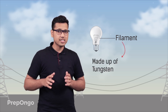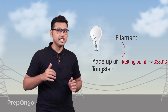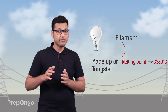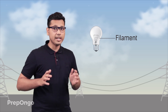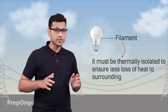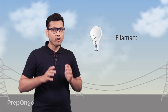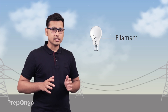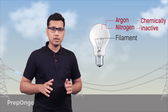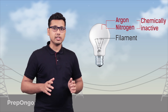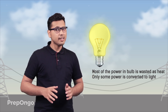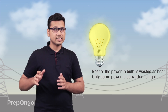To ensure that, we use tungsten whose melting point is 3380 degrees Celsius, which is very high, and hence tungsten is used to make the filaments of the electric bulb. The filament of the bulb must also be thermally isolated to ensure that it does not lose much heat to the surroundings. For this purpose it is filled with gases like Argon and Nitrogen, which are chemically inactive and hence prolong the life of the bulb and keep it thermally isolated. Most of the power used in the electric bulb appears as heat, and only some part appears as light.